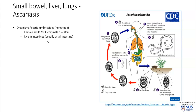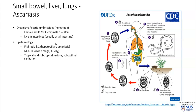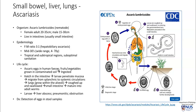Usually these worms live in the intestines, in particular in the jejunum. Epidemiologically, the presence of hepatobiliary ascariasis is seen more frequently in women in the mid-30s, and this infection tends to affect tropical and subtropical regions, especially in areas where there is suboptimal sanitation.